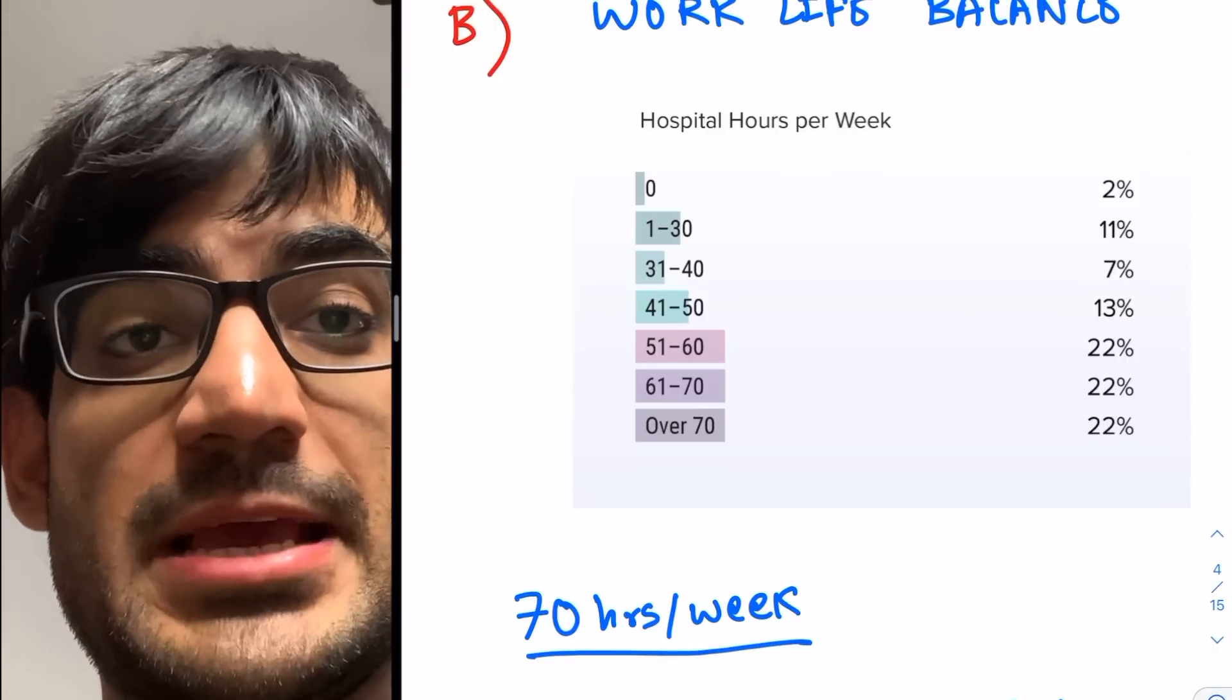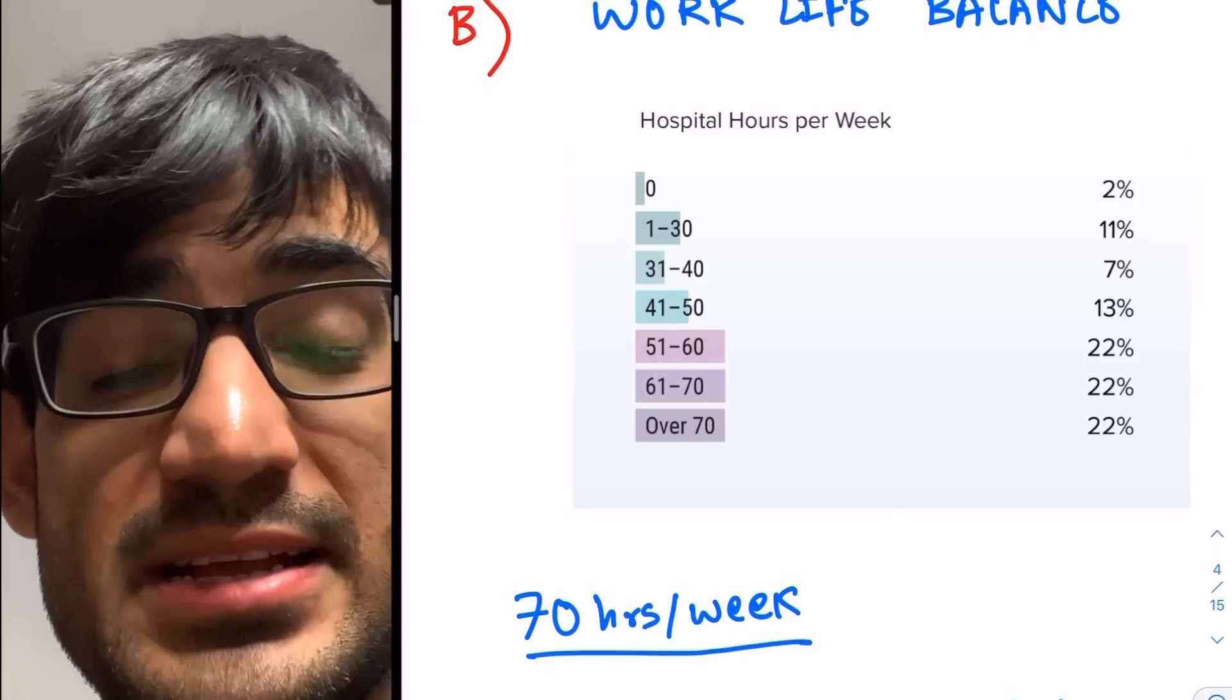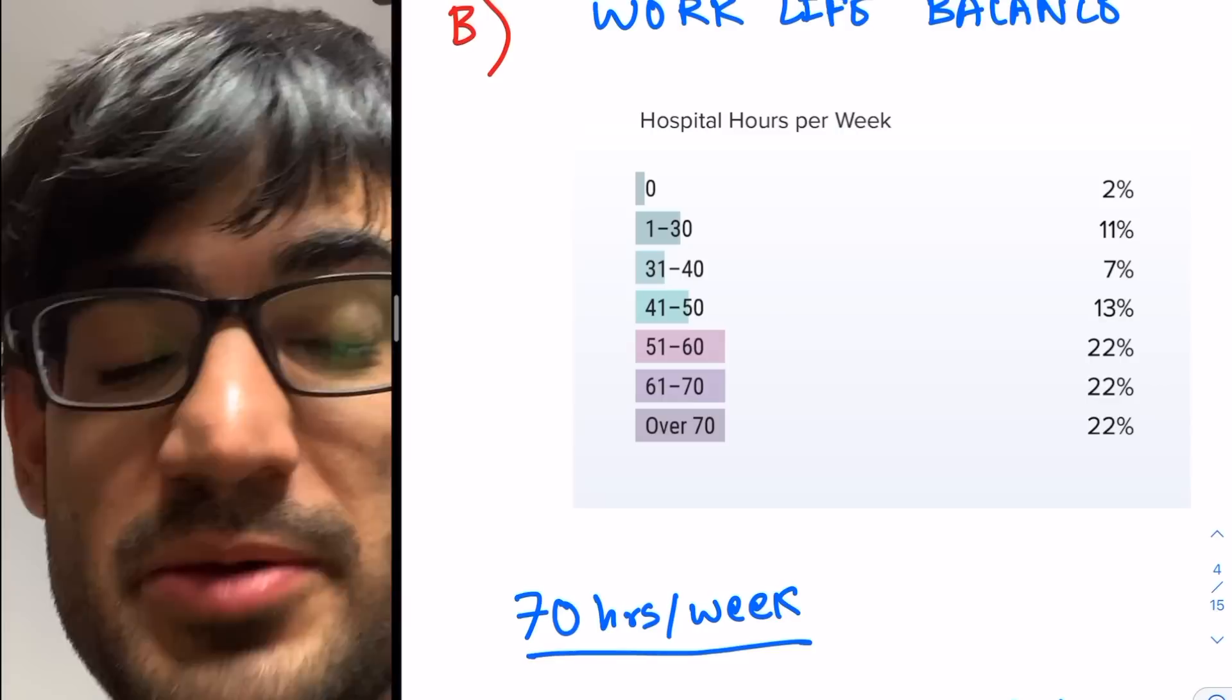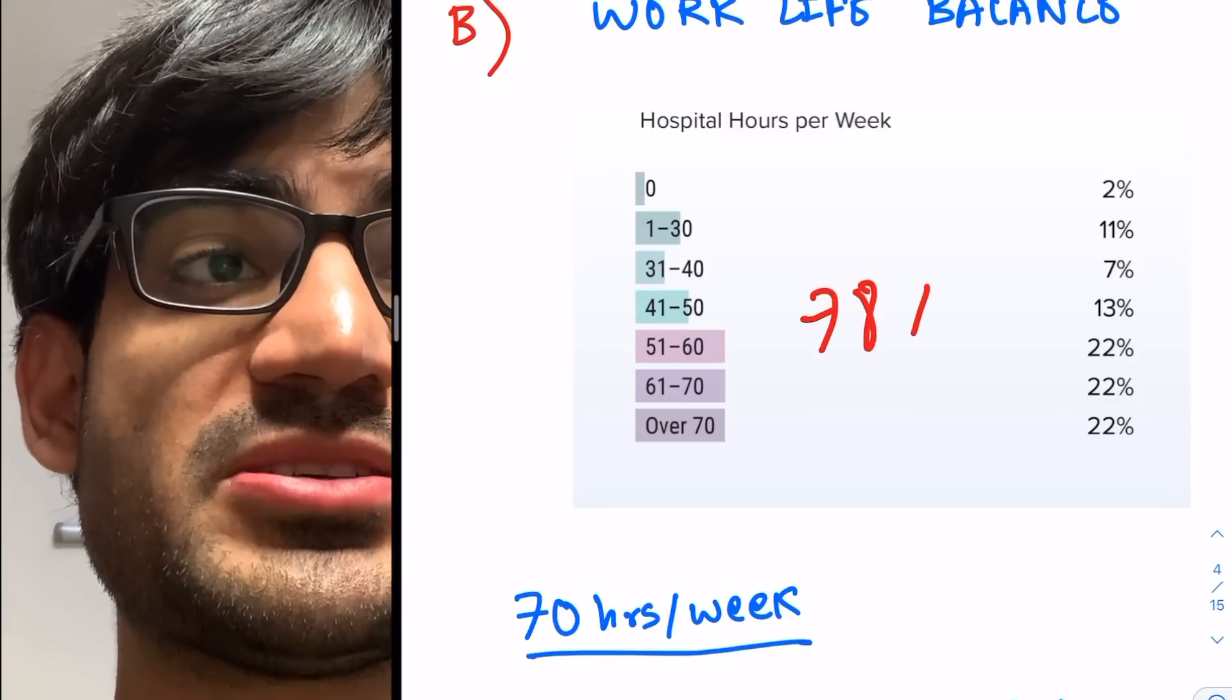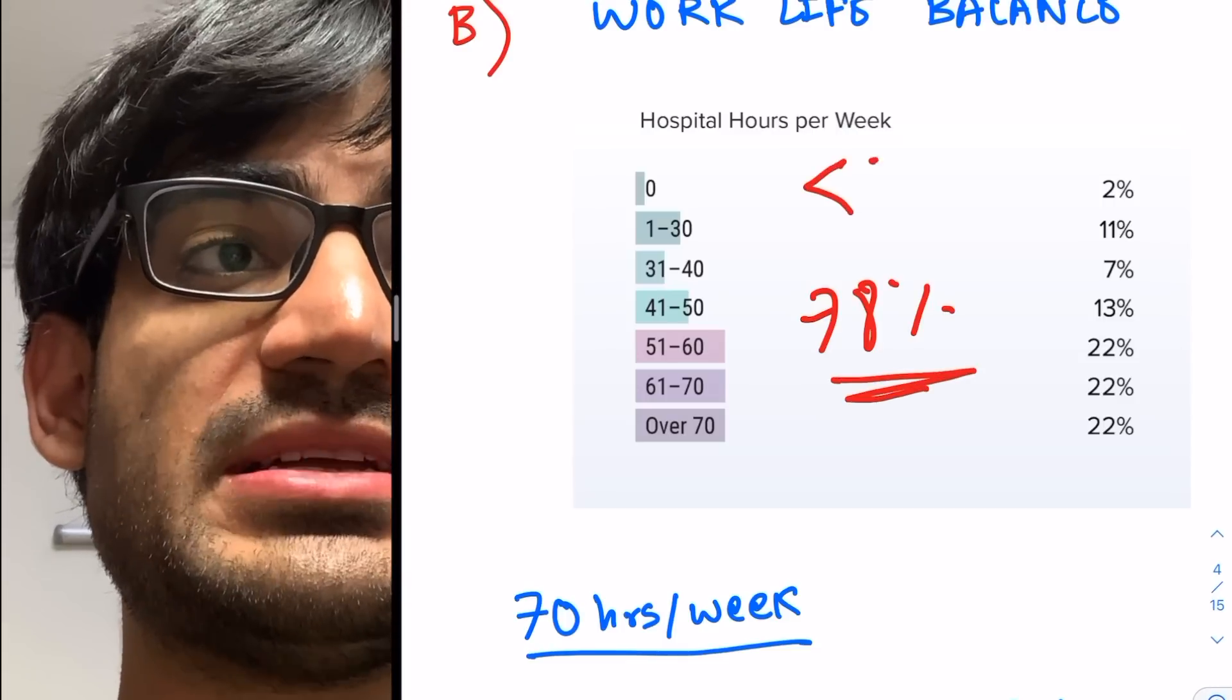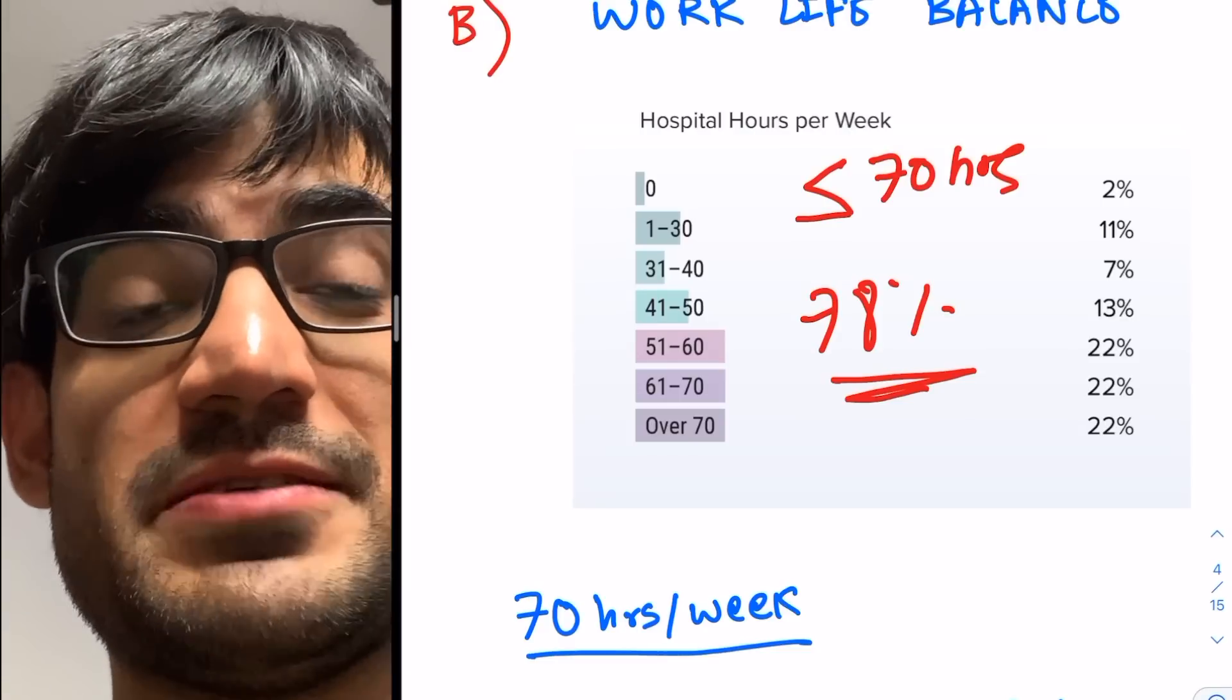And most residents work less than about 70 hours per week. So you can see, this is from the Medscape survey, which surveyed residents all across America anonymously and they reported their findings. You'll be seeing that about 78% of residents work less than 70 hours a week.